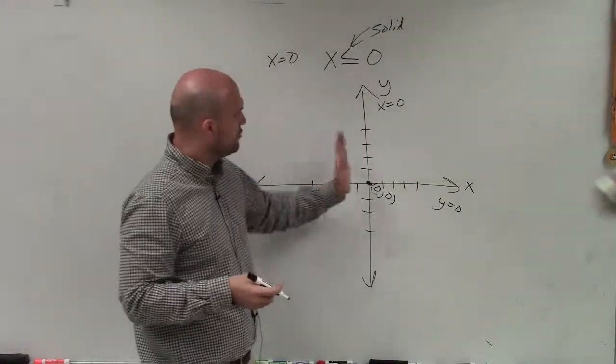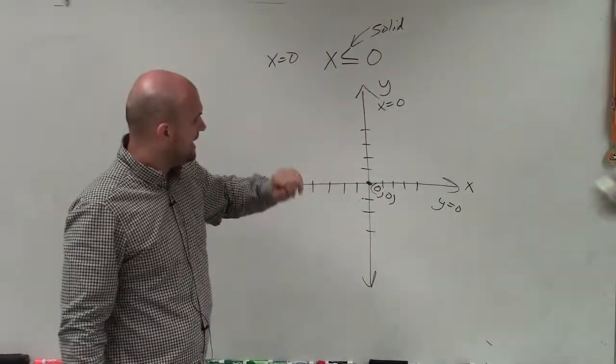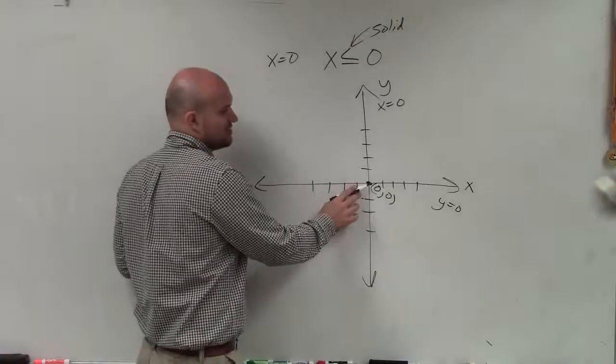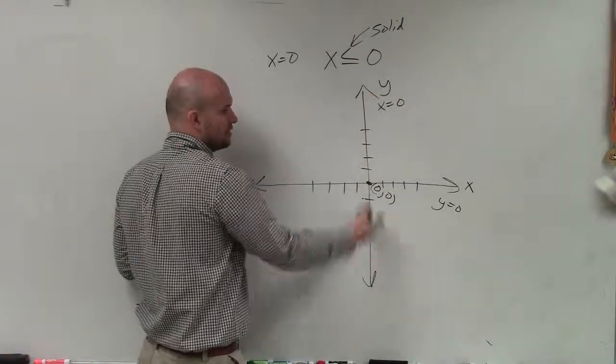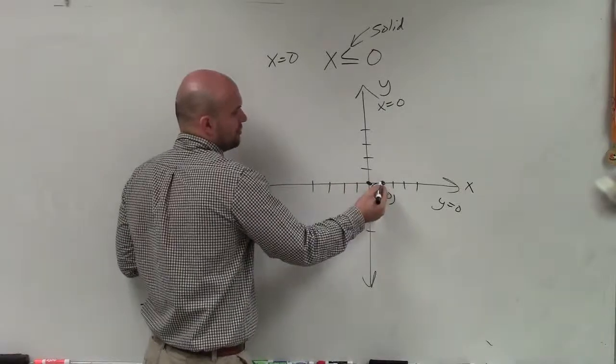The next thing we want to do, what about points to the left or to the right of the line? Which ones are going to be true? We can't choose our point 0 comma 0 because our boundary line goes through that point. So I'm going to choose any point, let's just choose the point 1 comma 0.